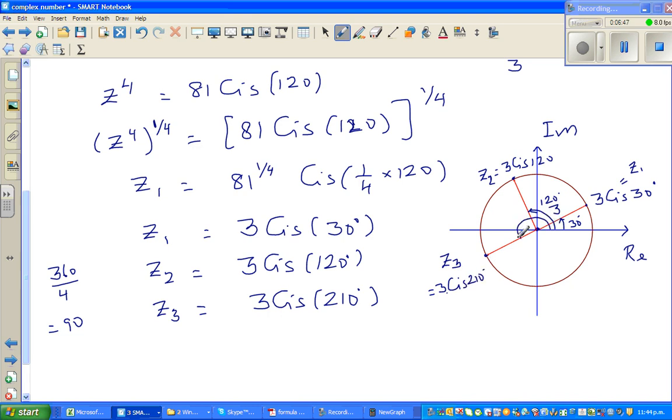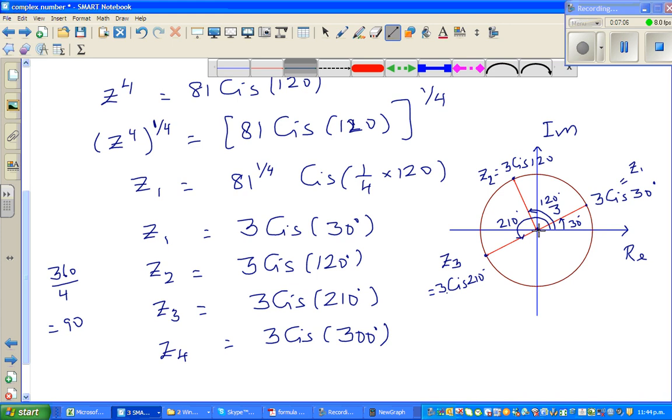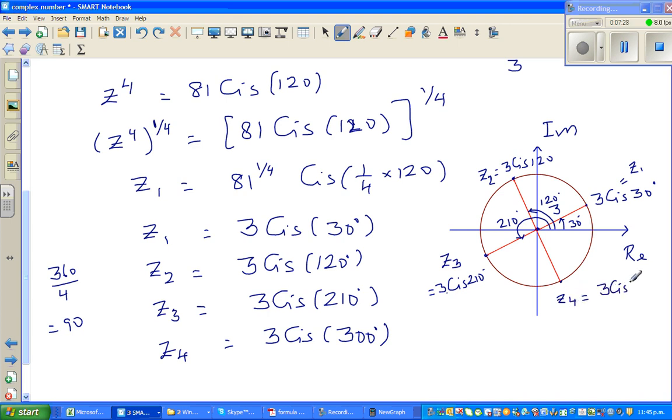And finally z4 is 90 away, that is 3 cis, if you add 90 that is 300 degrees. We will change this into radians later on. So this is z4, which is 3 cis 300 degrees. The roots have a geometry, they are at a particular angle.